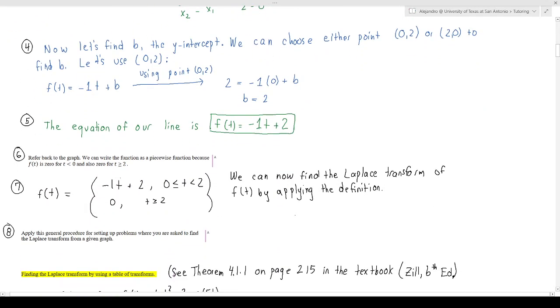At 0, t is greater than or equal to 0 but less than 2, so basically t is between 0 and 2 including 0 but not including 2. We have the line -1t plus 2, and then it's going to be 0 for t including 2 or greater than 2.